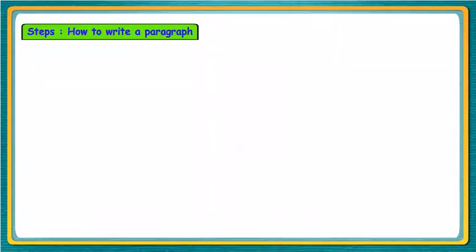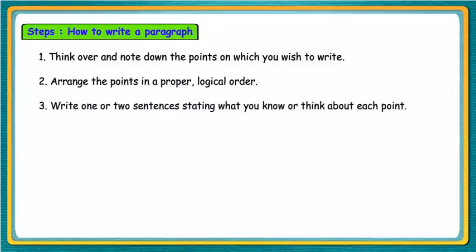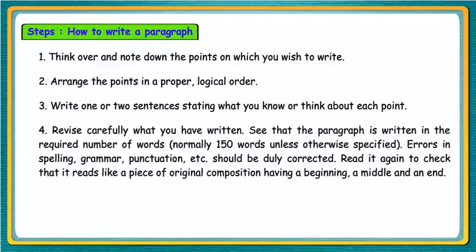Steps: How to write a paragraph. Think over and note down the points on which you wish to write. Arrange the points in a proper, logical order. Write one or two sentences stating what you know or think about each point. Revise carefully what you have written. See that the paragraph is written in the required number of words, normally 150 words unless otherwise specified.